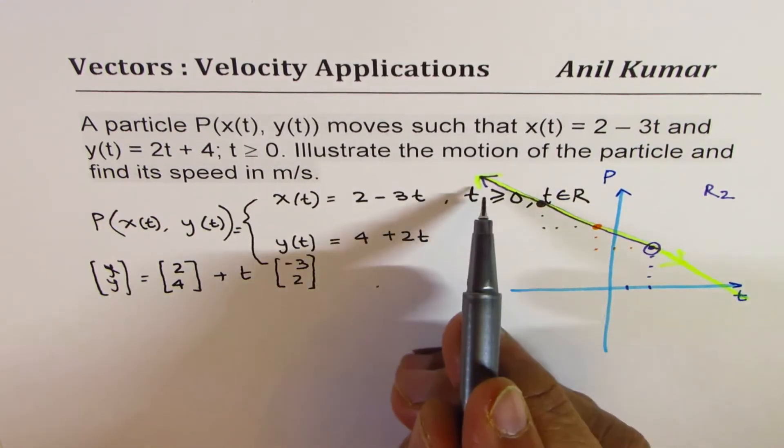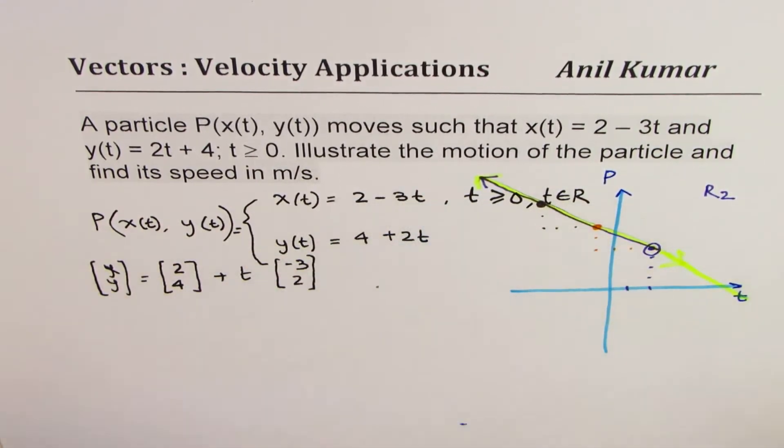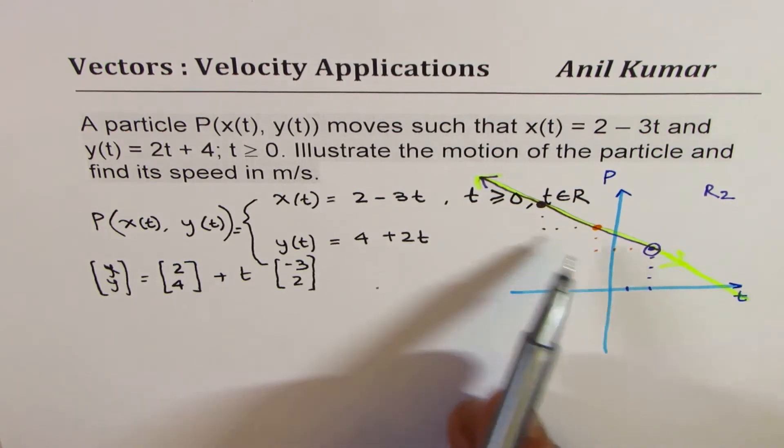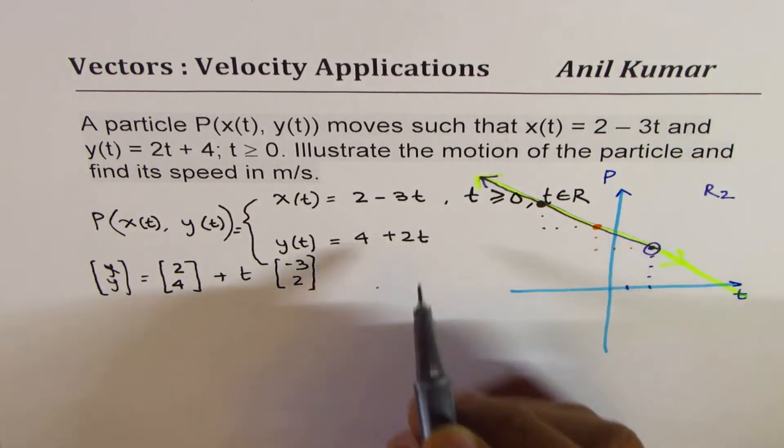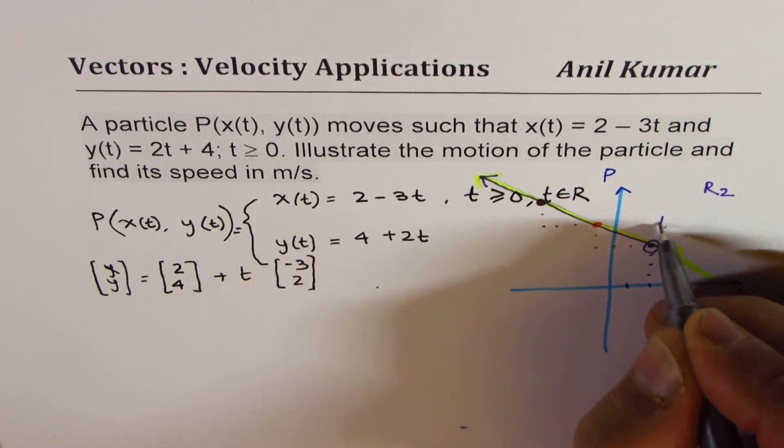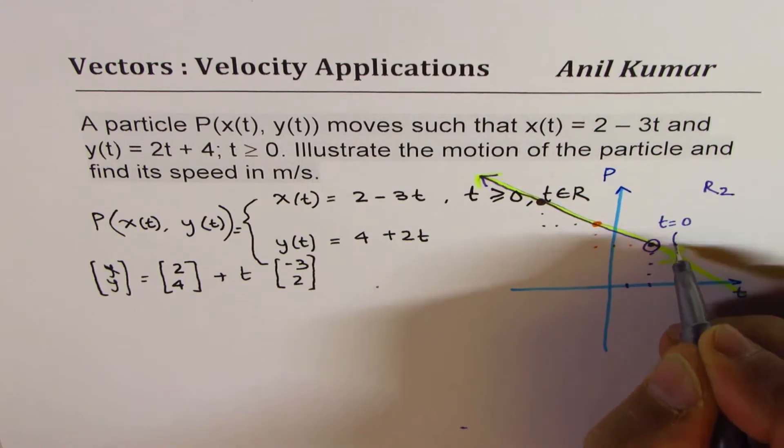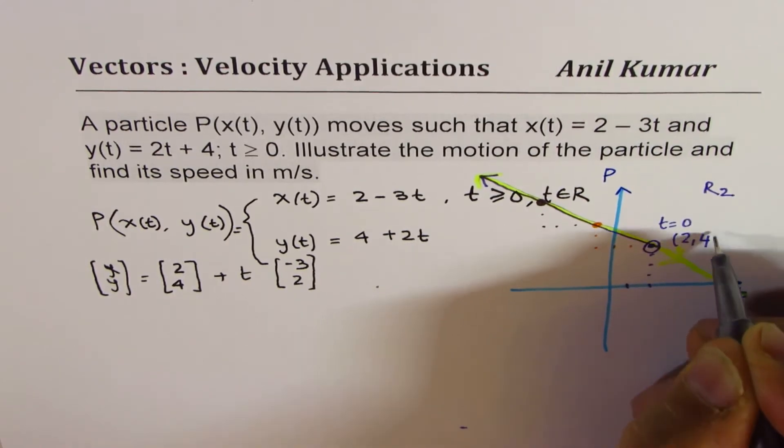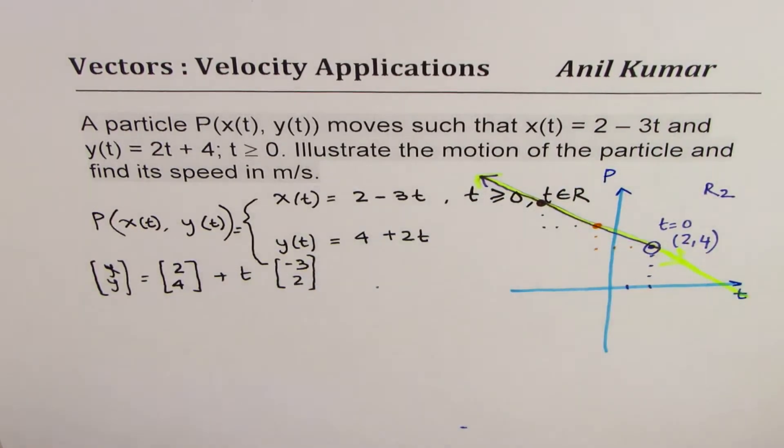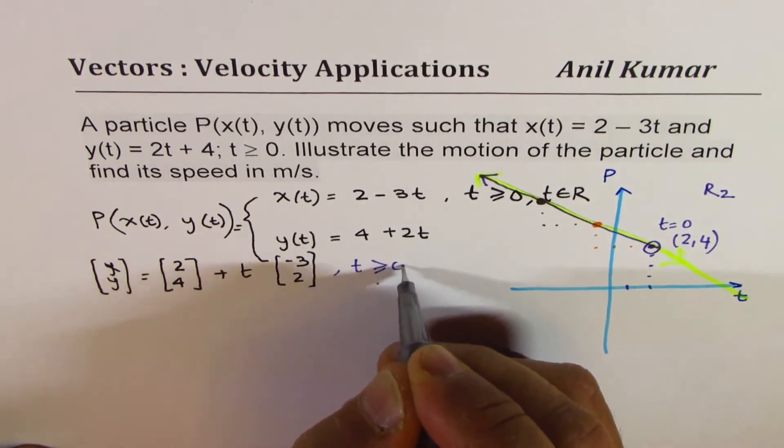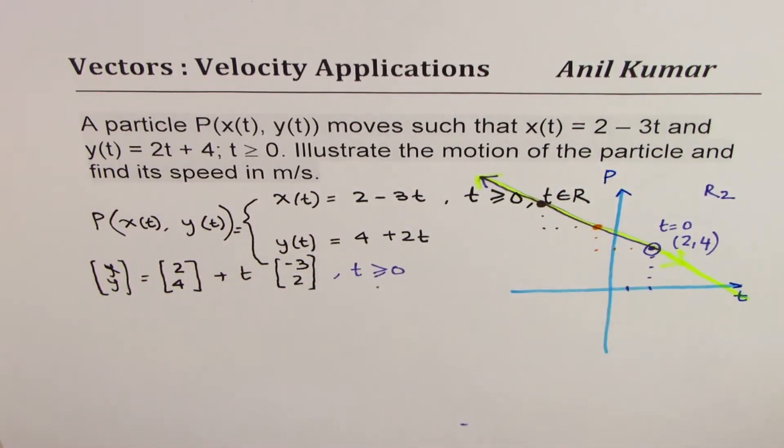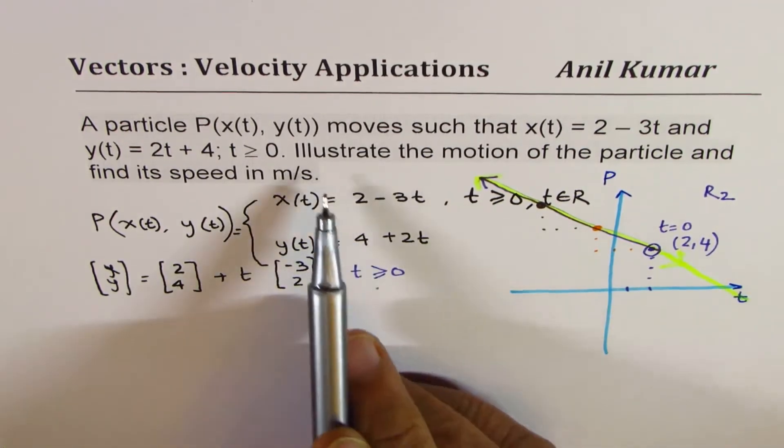That is the motion along a straight line. I hope that helps you to visualize. This is when t is 0, this parameter t equals 0, then we have this point which is (2, 4) and you are moving in this direction with the vector minus 3, 2, where t is greater than or equal to 0, therefore only in this direction.